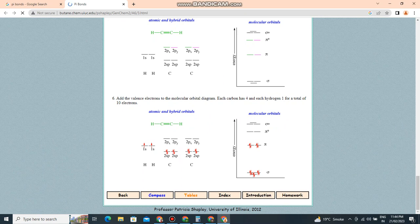Add the valence electrons to the molecular orbital diagram. Each carbon has four and each hydrogen one, for a total of 10 electrons.